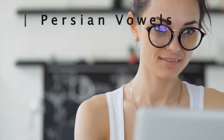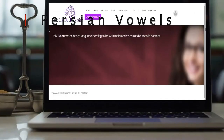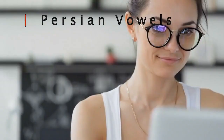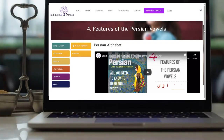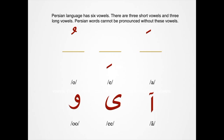It's time to learn some basic features of the Persian vowels. Persian language has six vowels — three short and three long. Persian words cannot be pronounced without them.